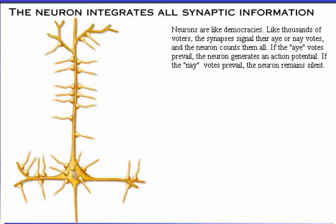Neurons are like democracies. Like thousands of voters, the synapses signal their aye or nay votes and the neuron counts them all. If the aye votes prevail, the neuron generates the action potential. If the nay votes prevail, the neuron remains silent.